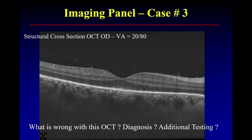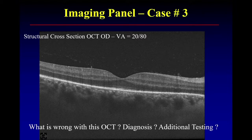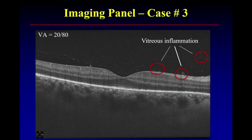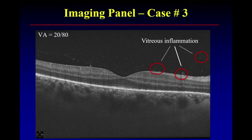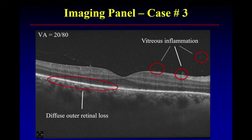Anything else? There are these lumpity-bumpities — RPE deposits — some lumps on the RPE. Is this pathognomonic? I don't see anything pathognomonic yet. A pertinent negative is that there's no choroidal hyperreflectivity or hypertransmission. What would that show if there was choroidal transmission? It would change your thinking — is it a photoreceptor-mediated process purely, or also an RPE-mediated process? So between the vitreous inflammation and this diffuse outer retinal loss, what's the diagnosis?